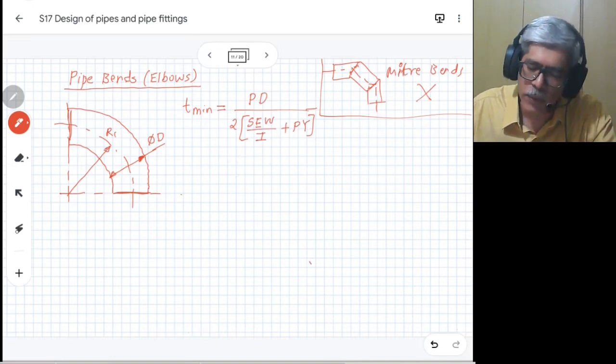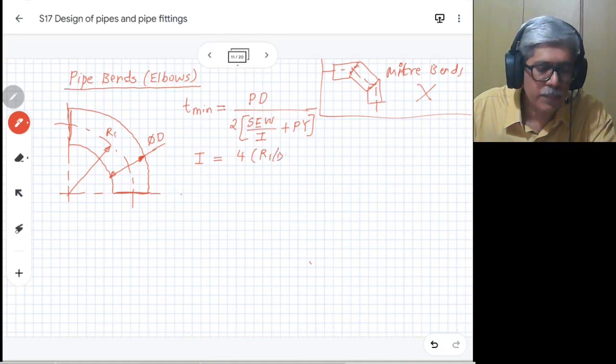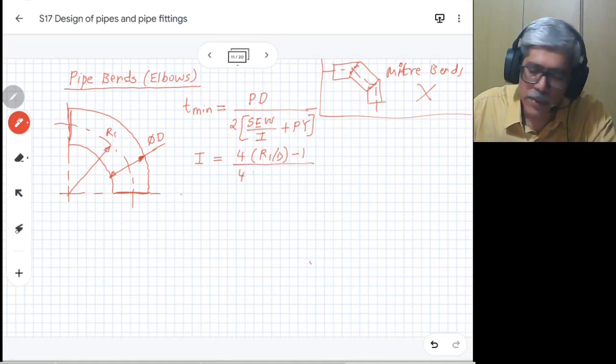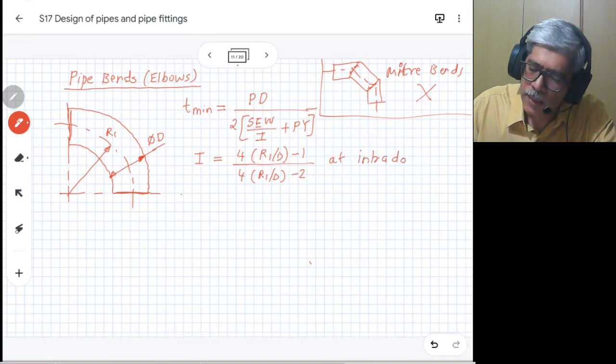The I is the factor which is new. I relates to the bend geometry, so I is given as: 4 times (R1/D - 1) divided by 4 times (R1/D - 2) at intrados.